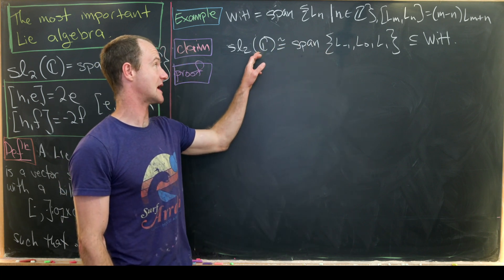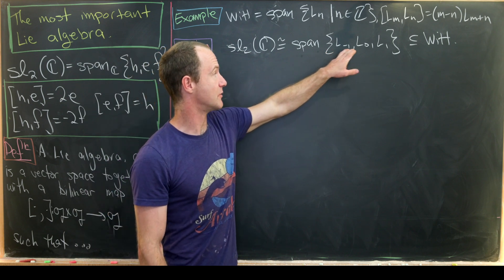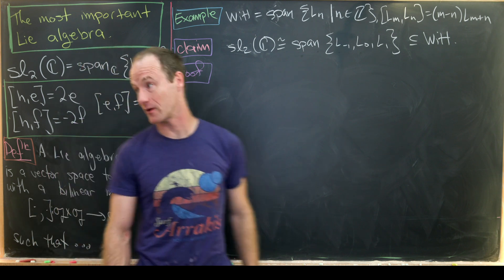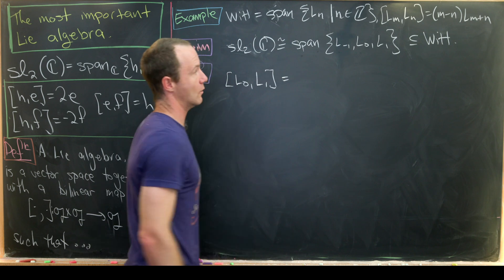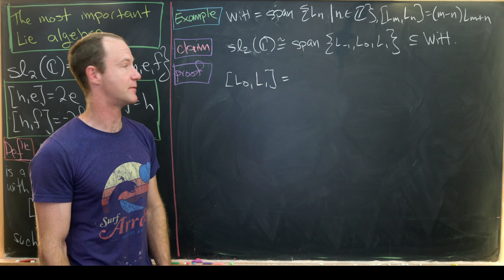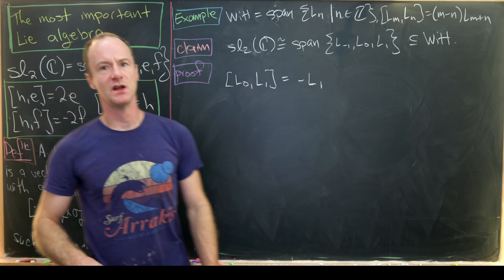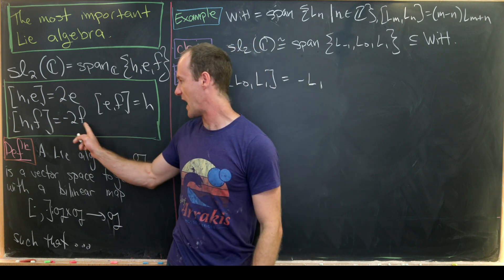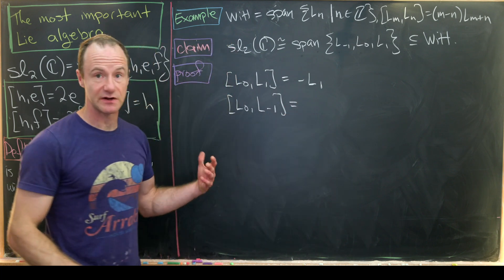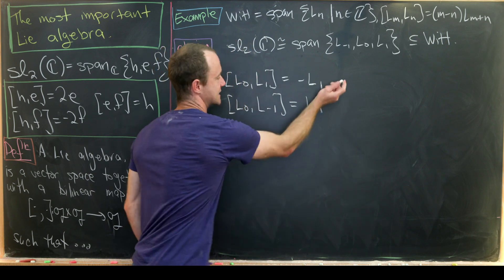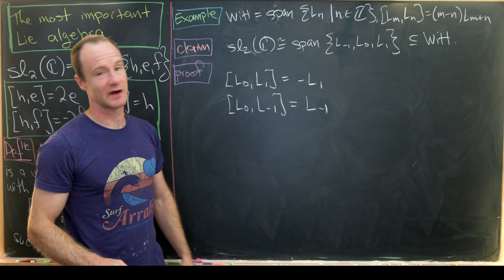We'll finish by showing that L₋₁, L₀, and L₁ form an SL2 triple — meaning they span a copy of SL2 inside the Witt algebra. To do this we calculate the commutation relations and potentially rescale. Using [Lₘ, Lₙ] = (m−n)L_{m+n}: [L₀, L₁] = (0−1)L₁ = −L₁. So L₁ will play the role of f since we get a negative sign. Next, [L₀, L₋₁] = (0−(−1))L₋₁ = L₋₁, which has a positive eigenvalue so L₋₁ plays the role of e, though we need to rescale.